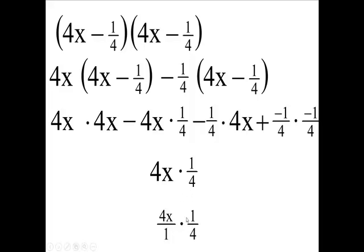Multiply 4x times one and one times four. Put the x off to the side and go 4 times one is, and one times four is four. Put this x right here. So this becomes this.